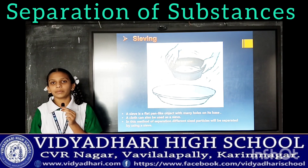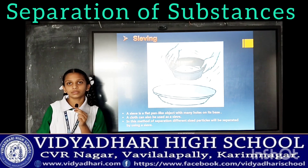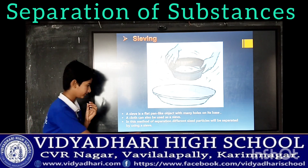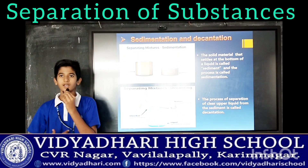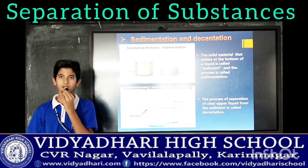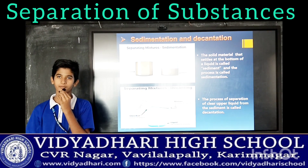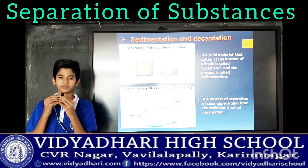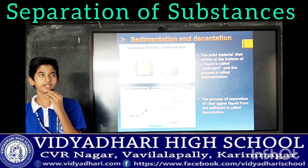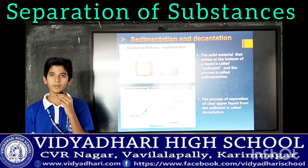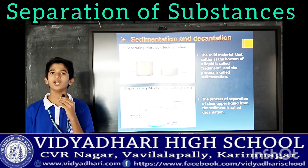My friends will explain about some more separation methods. My name is Afan from class 6. Today I am going to explain about separation methods. Sedimentation, decantation, and filtration are used to separate insoluble impurities from water. Distillation and crystallization are used to separate soluble impurities from water. Now let us discuss about sedimentation and decantation. What is sedimentation? The solid material that settles at the bottom of the liquid is called sediment, and the process is called sedimentation.